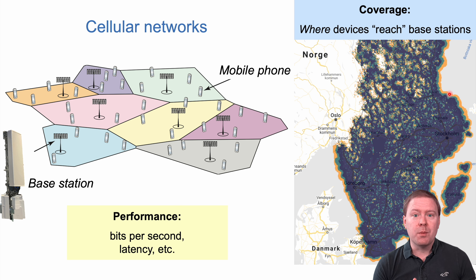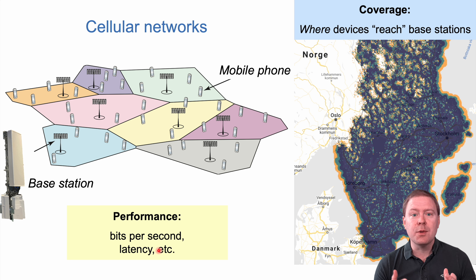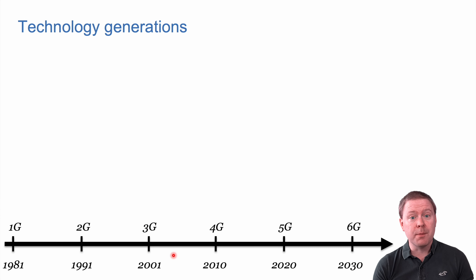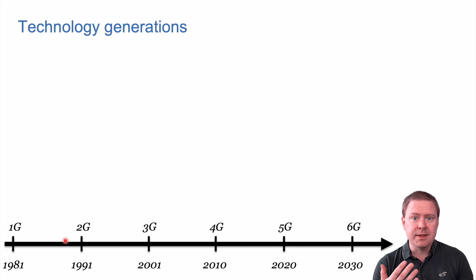But even more important today is what performance we can deliver at different locations — both in terms of bits per second and latency and other performance metrics. We have passed through a number of different generations of this cellular technology, starting with 1G in the 80s.